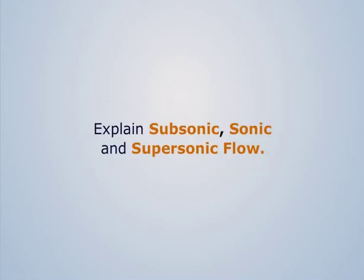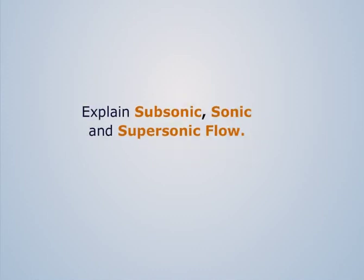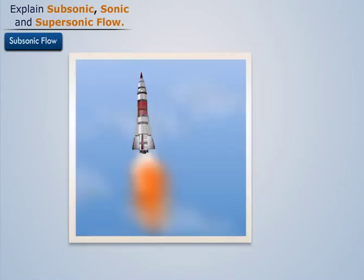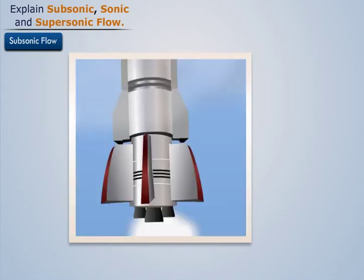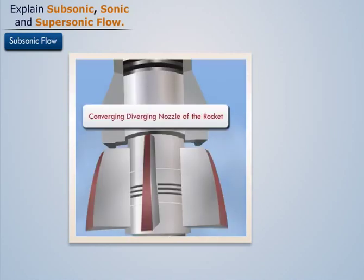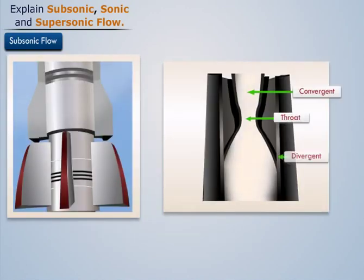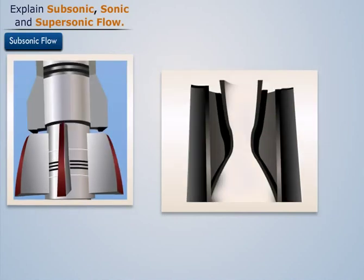To explain subsonic, sonic, and supersonic flow, first let us understand subsonic flow. Consider a rocket moving in air — the hot exhaust gases move out at a very high speed from the converging-diverging nozzle. This nozzle consists of three sections: convergent, throat, and divergent. At the convergent section, the speed of the exhaust gases is lower compared to the speed of sound.